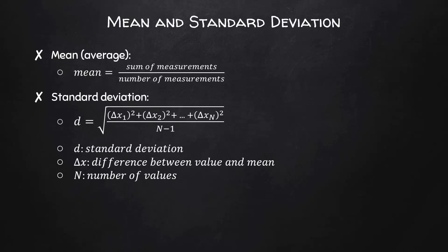d is the standard deviation. Each of the Δx's is the difference between one of the measured values and the mean value. And capital N is the number of values.